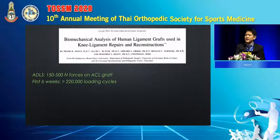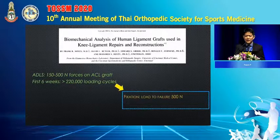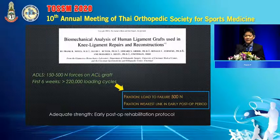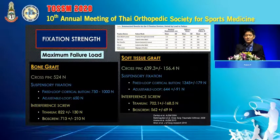From the biomechanics study, the daily life activity results in significant loading on the ACL graft. In the first post-op period, the loading process involves more than 200,000 loading cycles. The best fixation will be required to support early post-op rehabilitation and daily life activities.